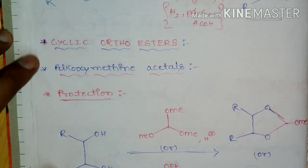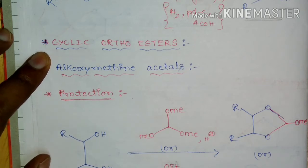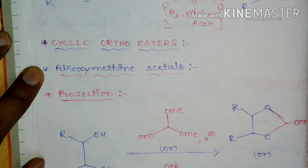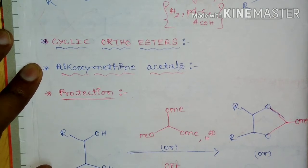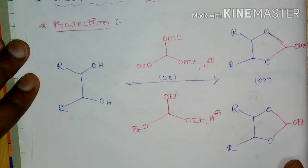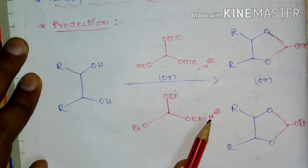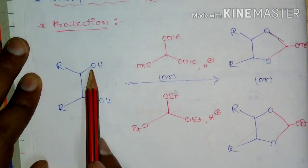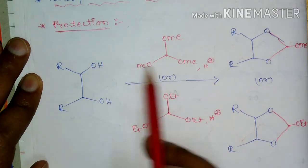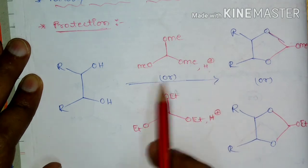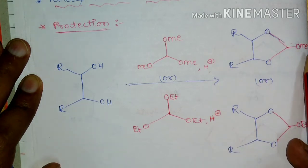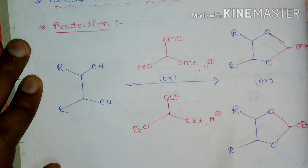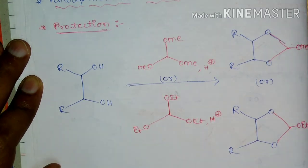Now we will see the other type of protection: cyclic orthoesters. Among cyclic orthoesters, 1,2-diols can be protected as alkoxymethane acetals. Treatment of 1,2-diol with trimethyl orthoformate or triethyl orthoformate in the presence of acid leads to the corresponding methoxymethane acetal or ethoxymethane acetal — collectively called alkoxymethane acetals.